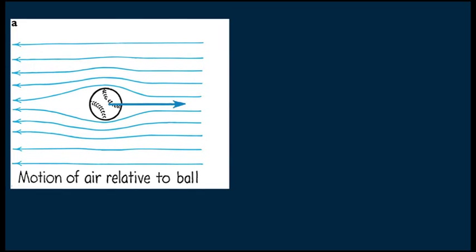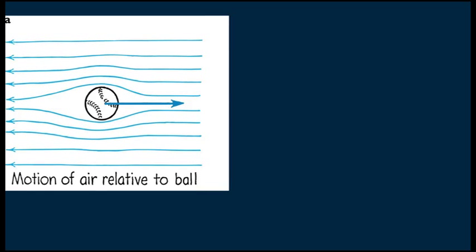A baseball pitcher and tennis player can put a spin on a ball to make it curve. Note the streamlines on either side of this baseball. When the tossed ball isn't spinning, the lines are symmetrical on either side, and its motion is a straight line.